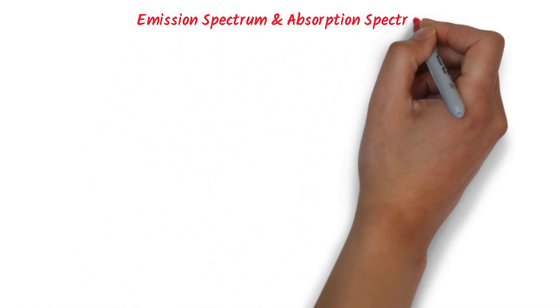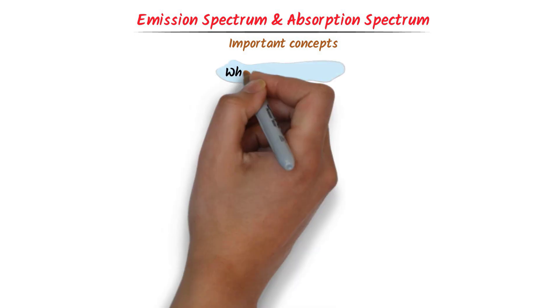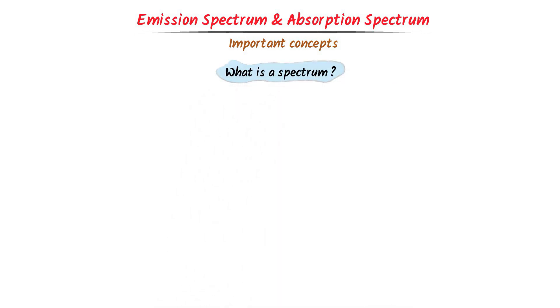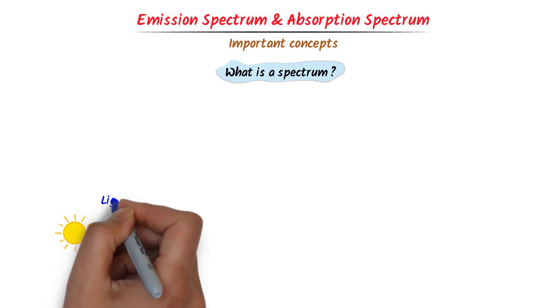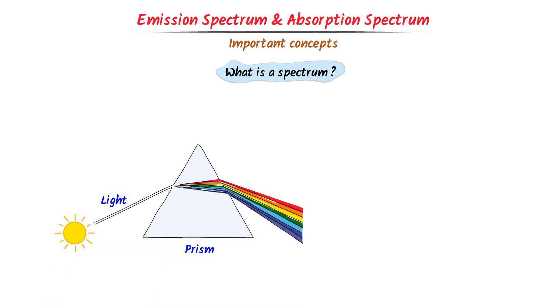Emission spectrum and absorption spectrum. I will teach you the important concepts of emission and absorption spectrum. Firstly, let me teach you what is a spectrum. Consider white light passed through a prism. The prism divides this white light into seven different colors.